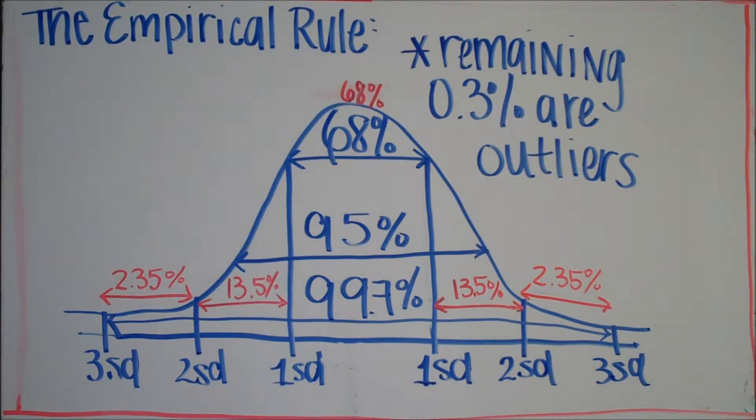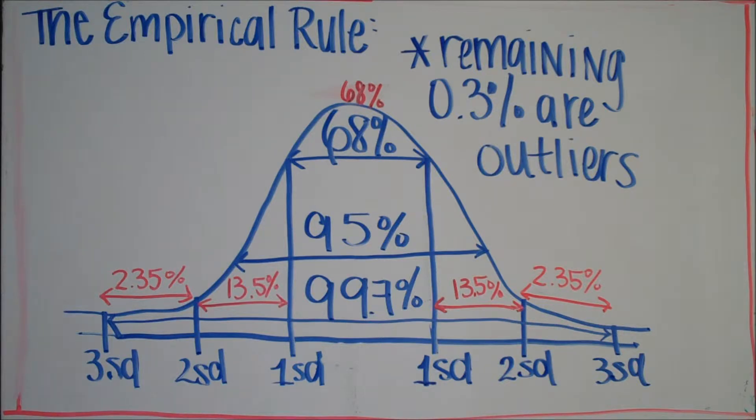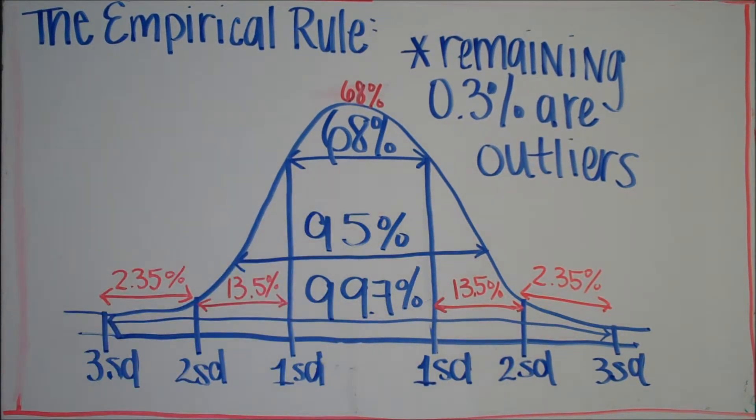You're going to have a set of data values, and of those data values, 68% of them should be between one standard deviation of the mean. And the mean, remember, in standard normal distribution is always 0 and the standard deviation is 1. 95% of those data values should be